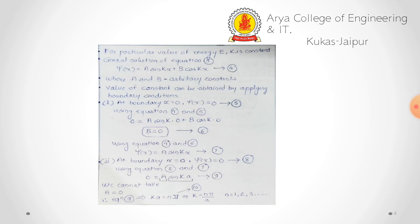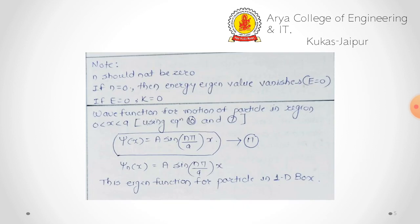We cannot take n = 0 because if n = 0, then k = 0, and if k = 0 then the energy of the particle would become 0. Note: n should not be 0 — if n = 0, the energy eigenvalue vanishes.